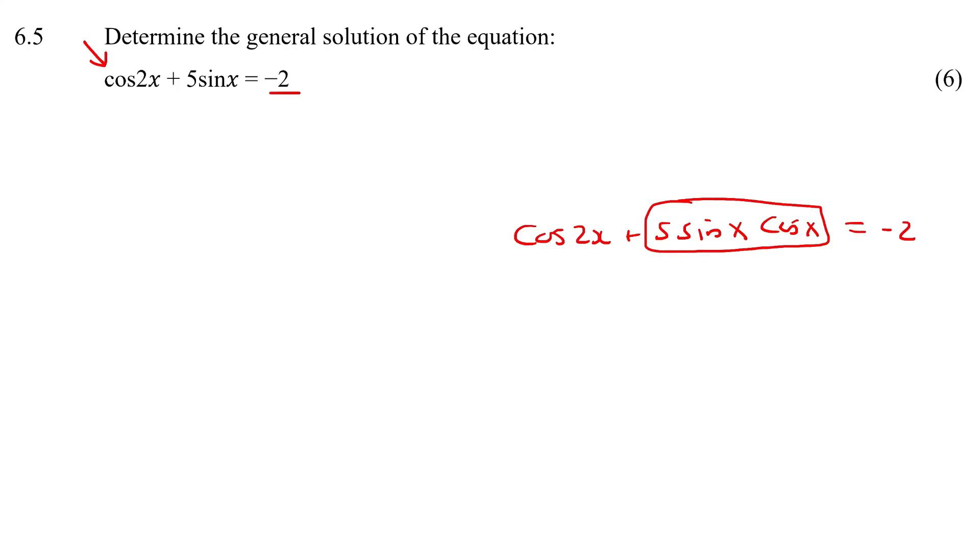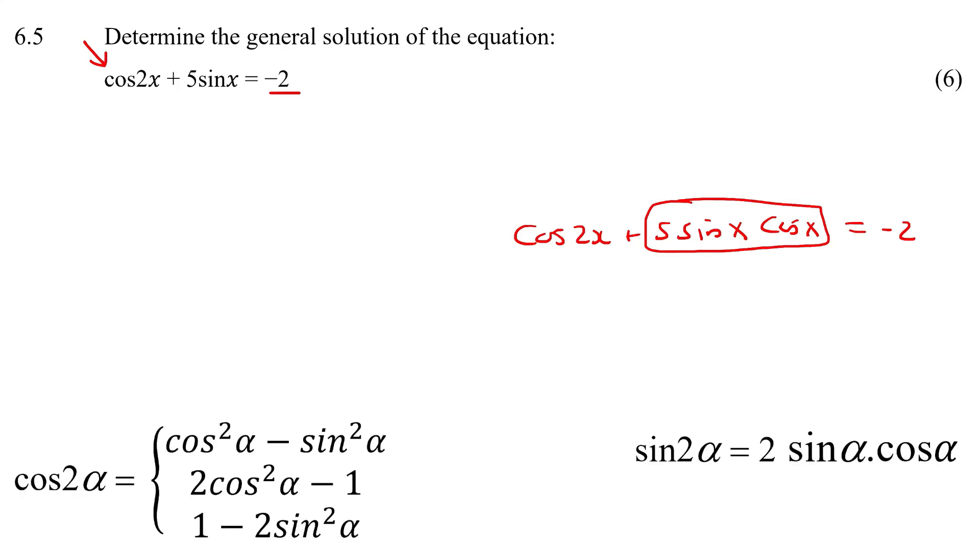In that type of example, I would want you to choose this one, the one that's got a sin and a cos, because then you're going to get one of those weird kind of trinomials. If it was that one, I would use cos squared minus sin squared.